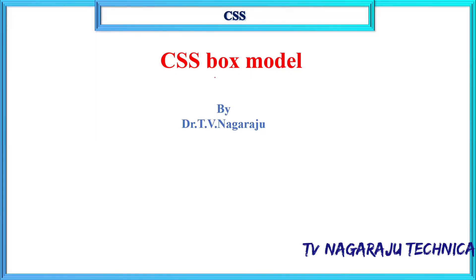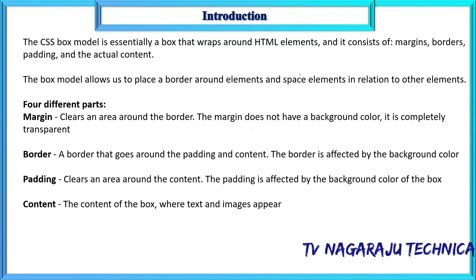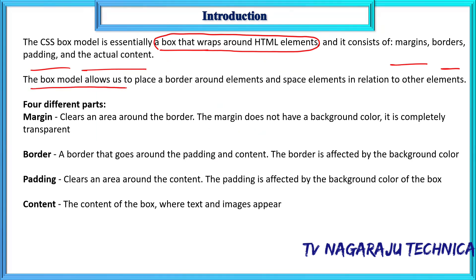Welcome to our channel. In this session we will discuss the box model in CSS. A box model is simply a box that wraps around HTML elements, and this box consists of margin, borders, padding, and the actual content. The purpose of the box model is to place a border around HTML elements and provide some space around the element.